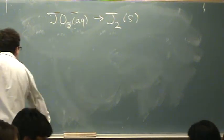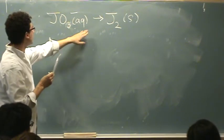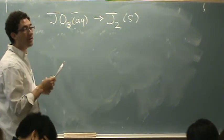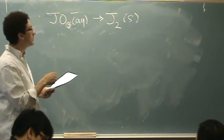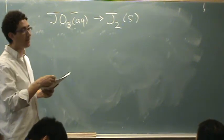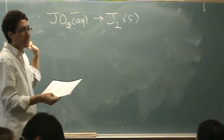This is just purely balancing. I wrote JO3- and J2 so that you have no idea what J is. It forces you to actually do the balancing yourself. And as you can see, it's meaningless what J is for balancing.